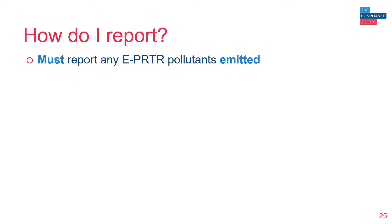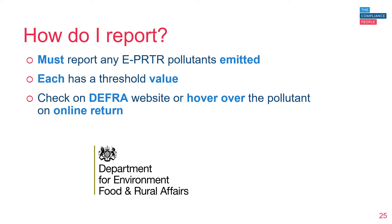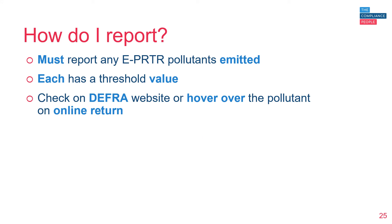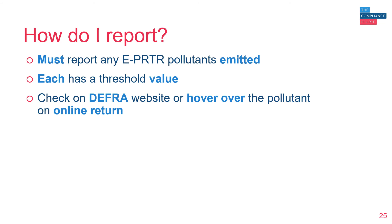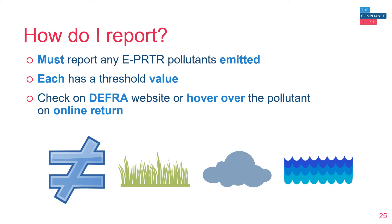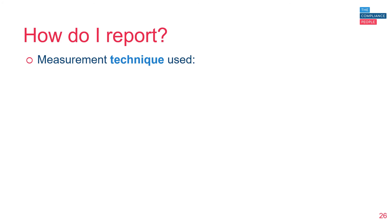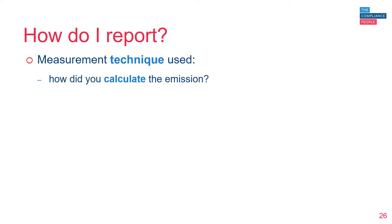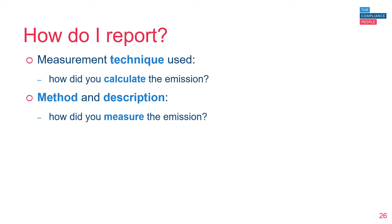So how do you go about reporting? You have to report any EPRTR-specified pollutants that are emitted, and each of these pollutants will have a threshold value, which you can check on the DEFRA website — though this isn't always necessary if you're doing the return online, as hovering your mouse over the pollutant will display the threshold. The things that are reportable are substances considered to be environmentally significant and of interest to the public. Each pollutant also has different threshold values for emissions to land, air and water. You'll be required to report what measurement technique you've used — whether you've calculated the emission using a formula, measured it using equipment, or estimated it. You also need to report the method and a description of that method, essentially how you've measured the emission, with some descriptive text when you report.